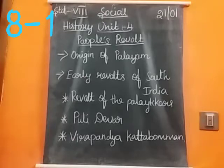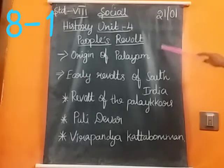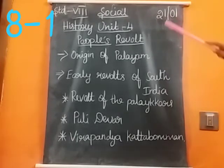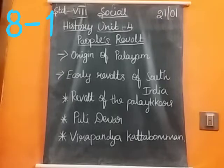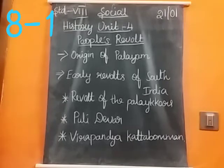This is the title of Unit 4. Now we are going to know the learning objectives: to know the Palaiyakkarar system in Tamil Nadu; to understand the role of Pulidever and Kattaboman in the anti-British oppression; to know about the South Indian rebellion; to know the causes and effects of Velu Nachiyar; and to understand the causes and impacts of the Revolt of 1857.